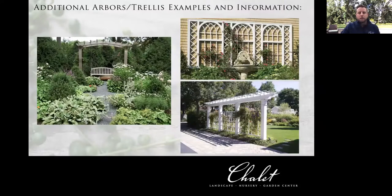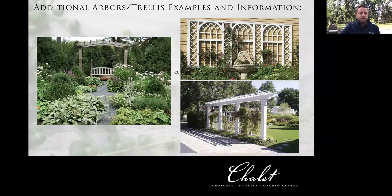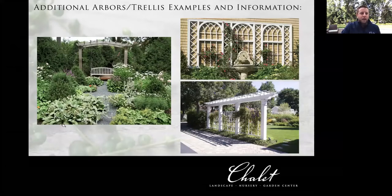A couple more examples: this one draws your eye towards a focal point and gathering space — a bench at the end. It's a beautiful composition overall; your eye isn't drawn to any one boxwood or perennial in front, but along with the path it carries your eye right towards that area. And there are a couple more examples of beautiful trellises and arbors with climbing plant material on them.